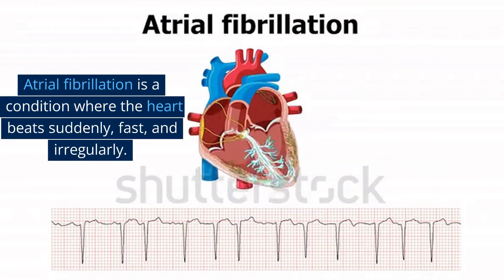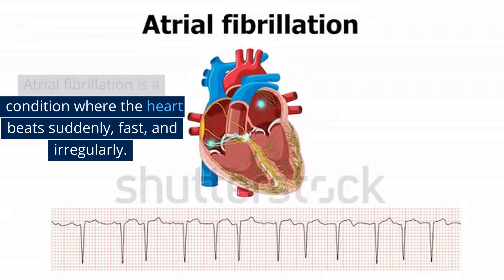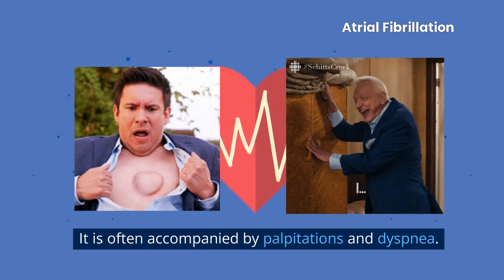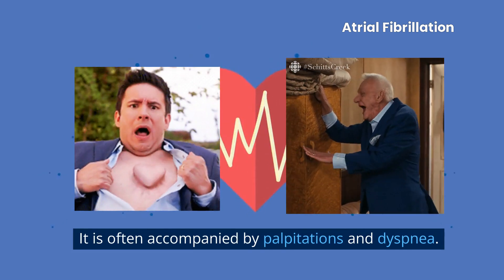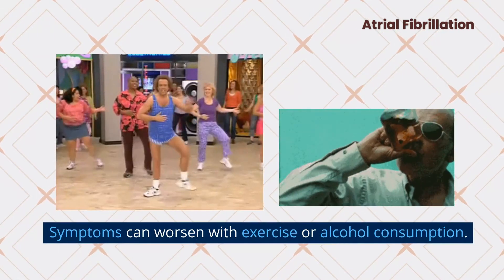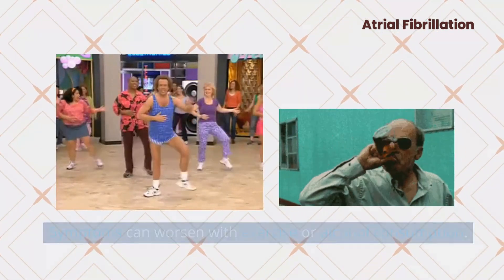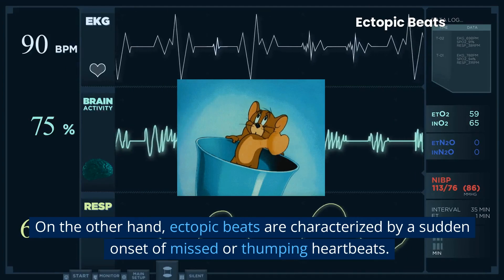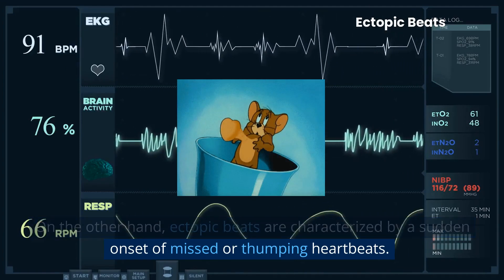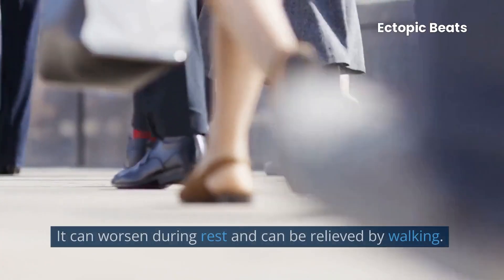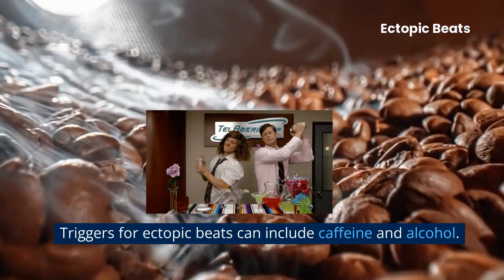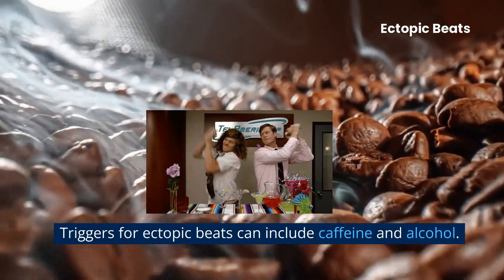Atrial fibrillation is a condition where the heart beats suddenly, fast, and irregularly. It is often accompanied by palpitations and dyspnea. Symptoms can worsen with exercise or alcohol consumption. Ectopic beats are characterized by a sudden onset of missed or thumping heartbeats. They can worsen during rest and can be relieved by walking. Triggers for ectopic beats can include caffeine and alcohol.